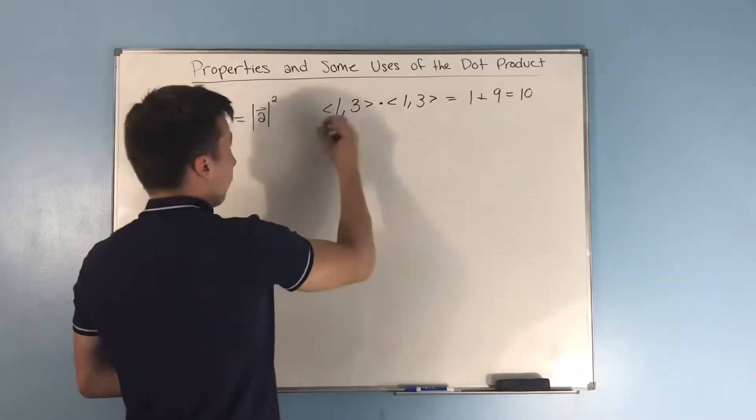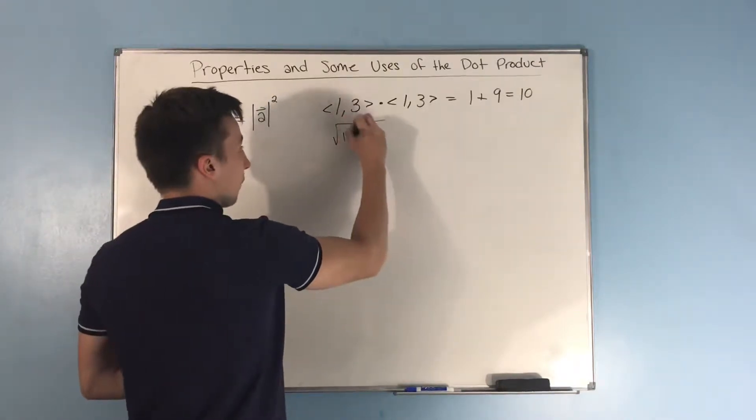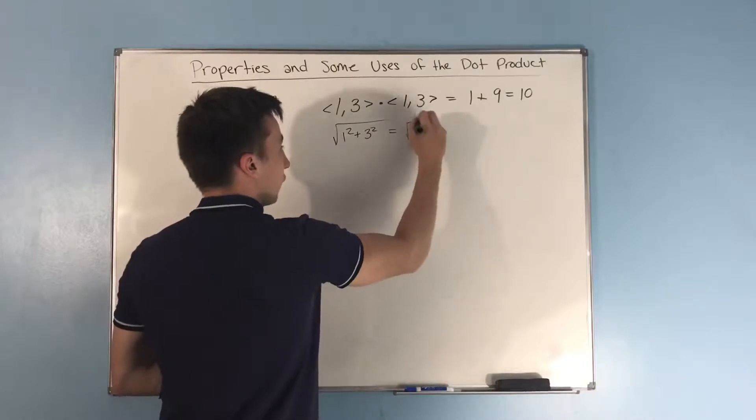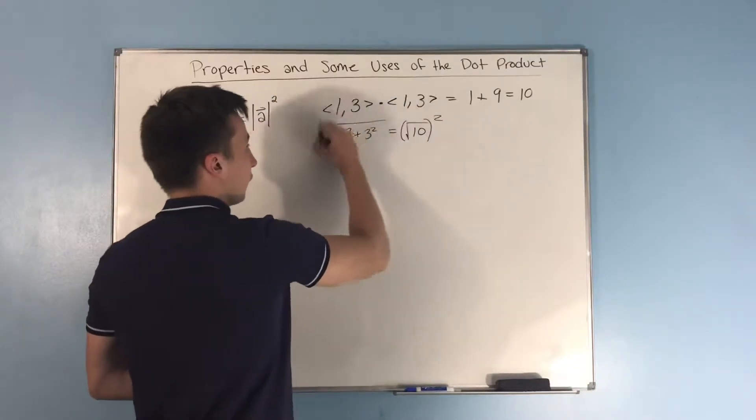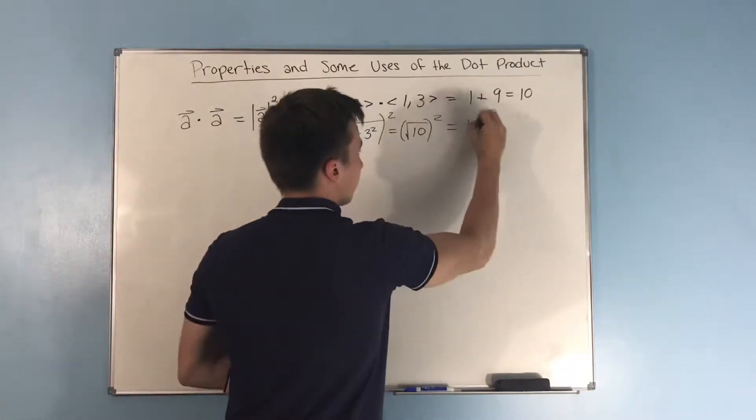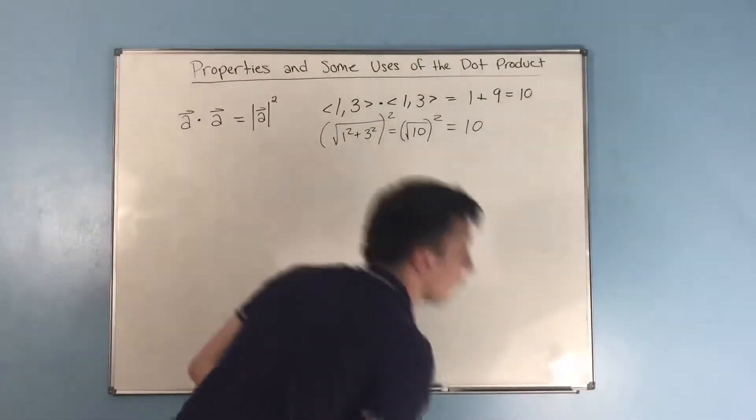If we find the magnitude of a, what that ends up being is 1 squared plus 3 squared, and of course that equals rad 10, and you have to square that still because of that square right there, and that equals 10. So you see there that those are equal.